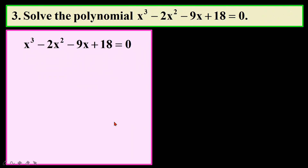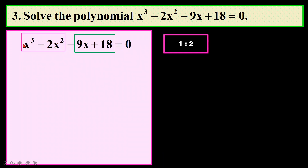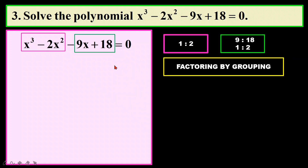Now for this third question, you can't find any common factor and you can't factorize this directly. So I will check if I can use the grouping method. I will check if this fits the ratio. The first pair gives a ratio of 1 to 2, and the second pair — 9 to 18 — also gives the ratio 1 to 2. So I can use the factoring by grouping technique. In the first part, the common factor is x squared, which I bring out, leaving x minus 2.